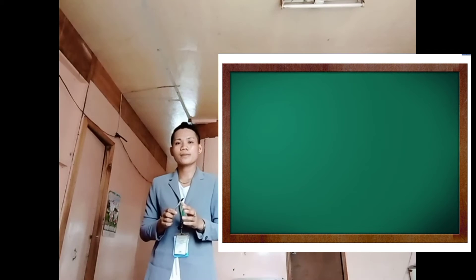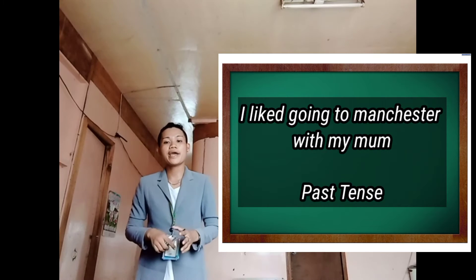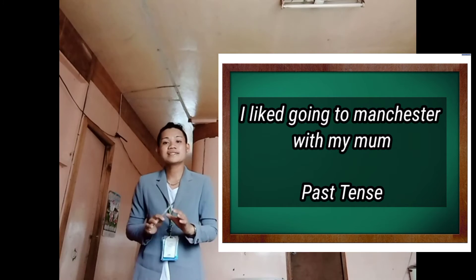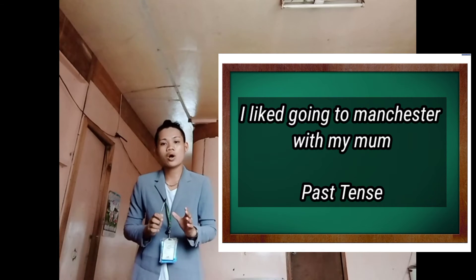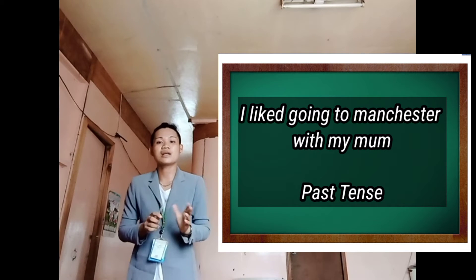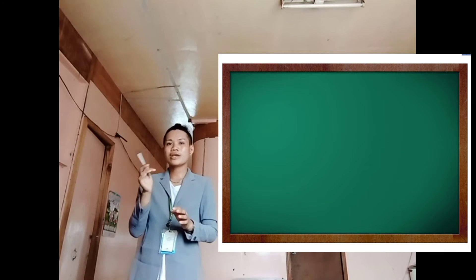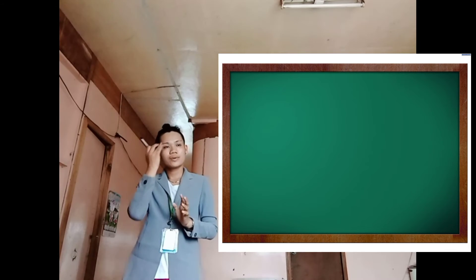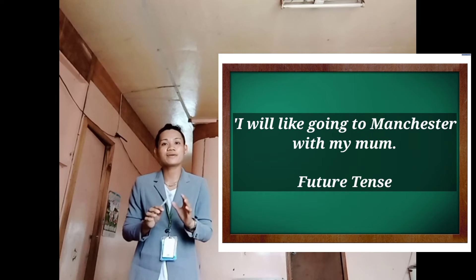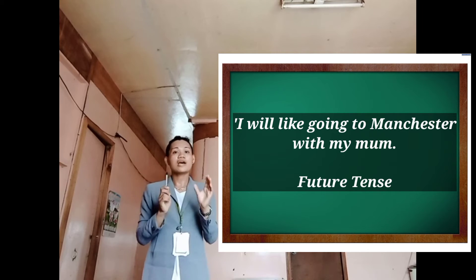Anyone? Okay, Mr. Gabi. 'I liked going to Manchester with my mom' — is what kind of verb tense? Your answer is past tense. Okay, that's correct, because the sentence describes an event that has already happened. How about constructing it in the future tense? Please stand up, Mr. Rulian. Okay, your answer is: 'I will like going to Manchester with my mom' — is it future tense? That's correct.